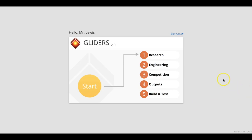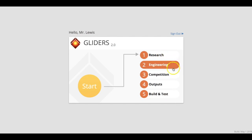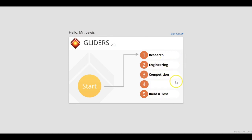Welcome to Gliders 2.0. This is our first module. I wanted to give you an overview of some of the buttons and things we'll be using. We have research — that's where we do all the reading and note-taking — and then we move on to engineering, competition outputs, and build and test. We'll be going back and forth between these things for the next few days.